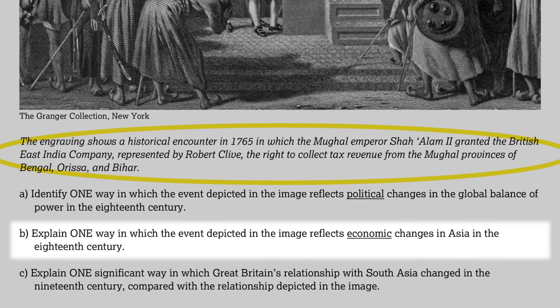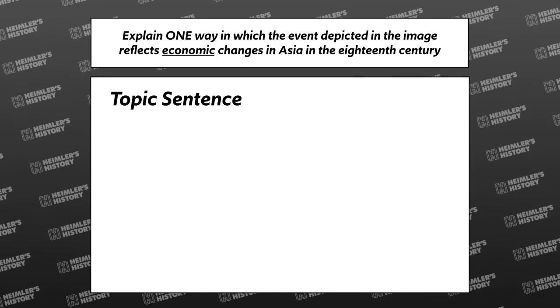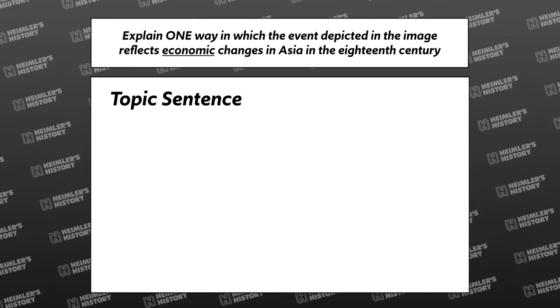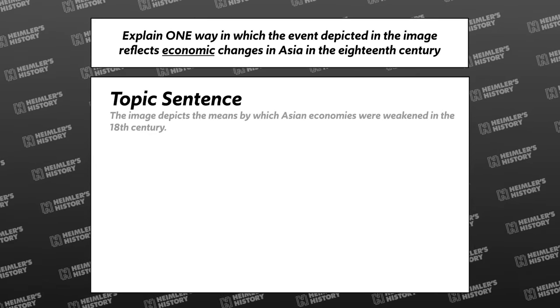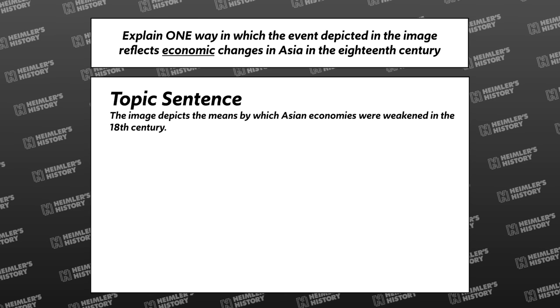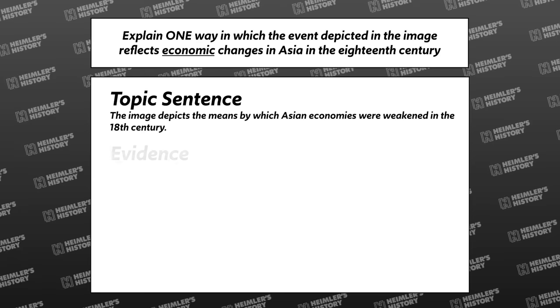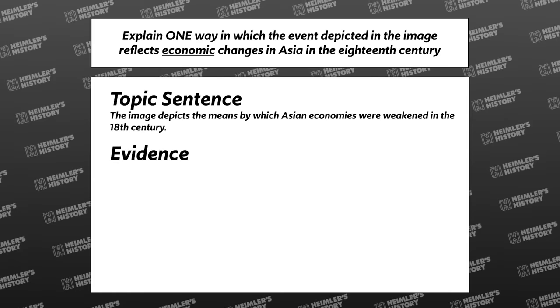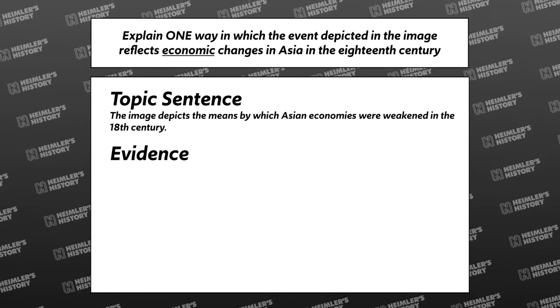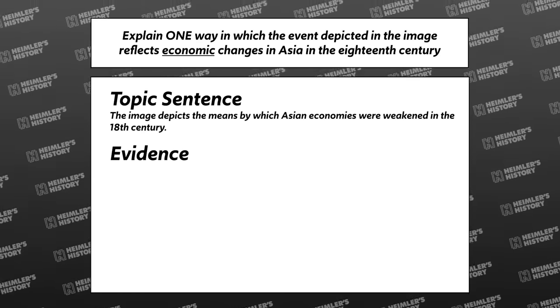Now let's work on Part B of this question: 'Explain one way in which the event depicted in the image reflects economic changes in Asia in the 18th century.' Alright, now let's spill the tea. Topic sentence — I just want to answer the question without getting too specific. Here's what I would write: 'The image depicts the means by which Asian economies were weakened in the 18th century.'